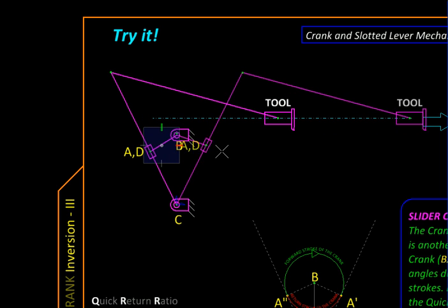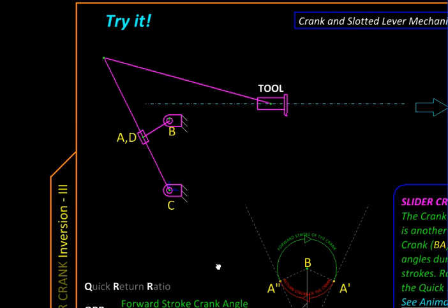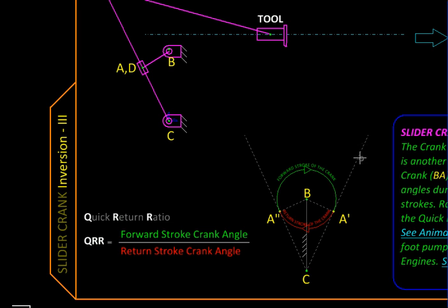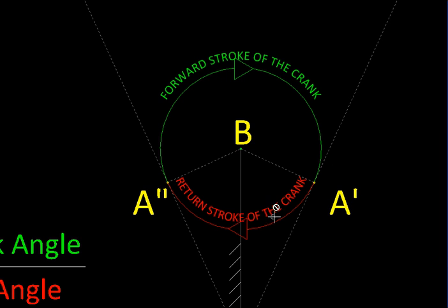And like inversion number two, we can get a quick return characteristic over here. The quick return ratio of this mechanism can be evaluated using the two extreme positions of the guide, which is usually a link with a slot in which the slider slides. And these two extreme positions are nothing but tangents to the circular path of the slider like this.